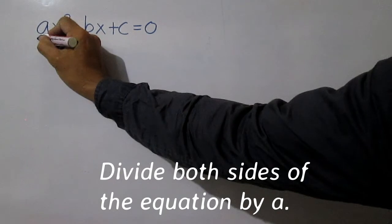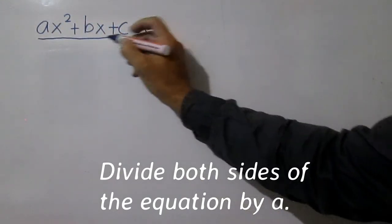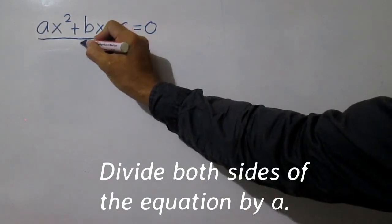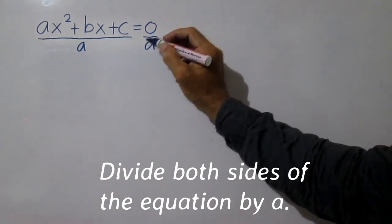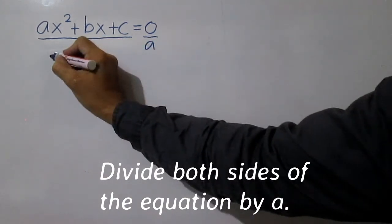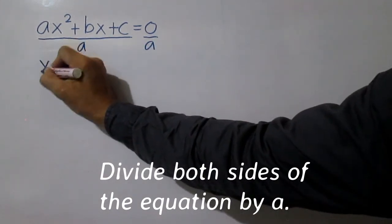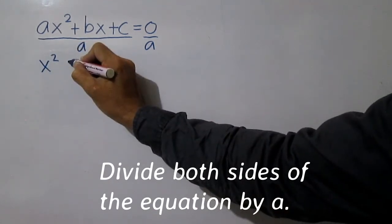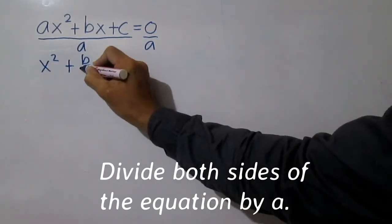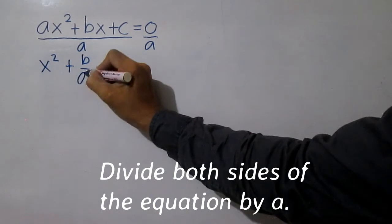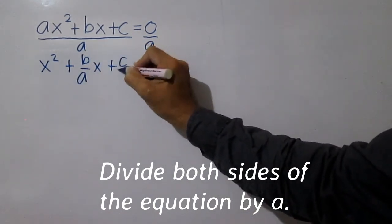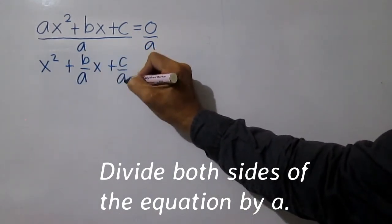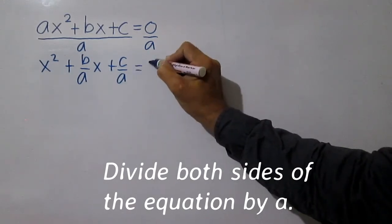Divide both sides of the equation by a, giving us: x squared plus b over a times x plus c over a equals 0.